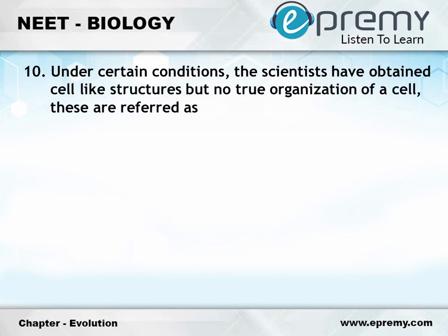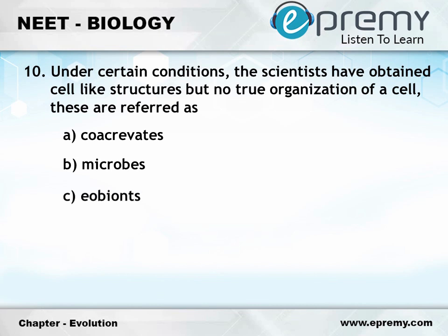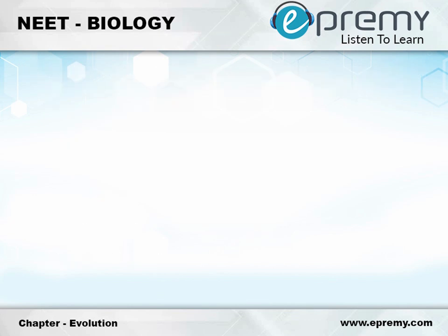Question number 10: Under certain conditions, scientists have obtained cell-like structures but no true organization of a cell. These are referred to as. Option A: Co-acervates. Option B: Microbes. Option C: Obions. Option D: Protests. And the answer is Option A: Co-acervates.